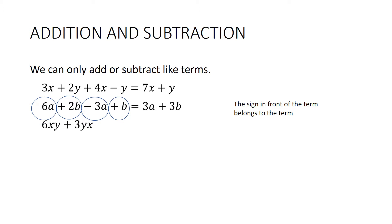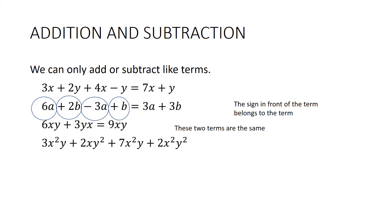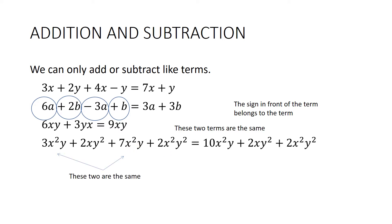What about this one? They are like terms — multiplication order is not important, so xy and yx are the same thing. So 6xy plus 3xy is 9xy. And this next one looks rather complex — do we have any like terms? We've got 3x²y and 7x²y, but those are different from xy² and from x²y². So the only two we can collect together are those, giving 10x²y plus 2xy² plus 2x²y².